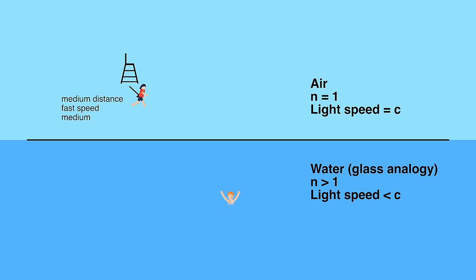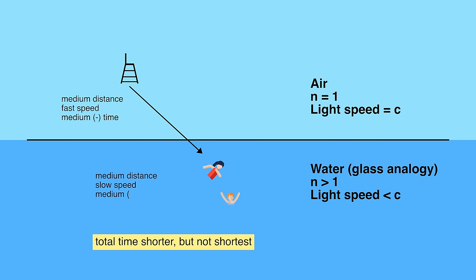Then there's the straight line path, and because the shortest distance between two points is a straight line, you might think that this is the fastest path. But because swimming is slower, it still isn't the shortest time.